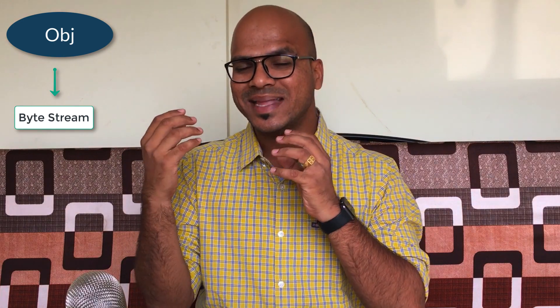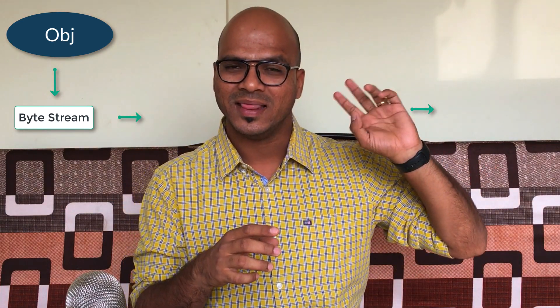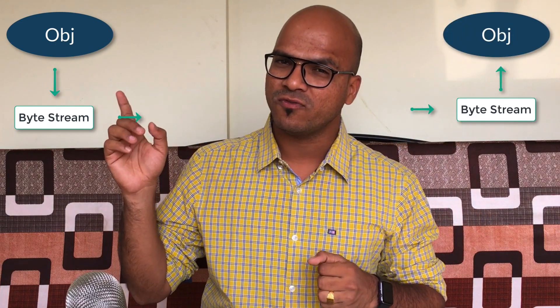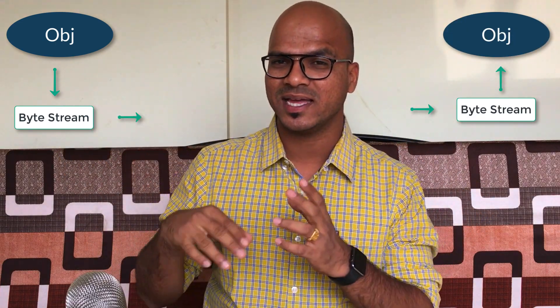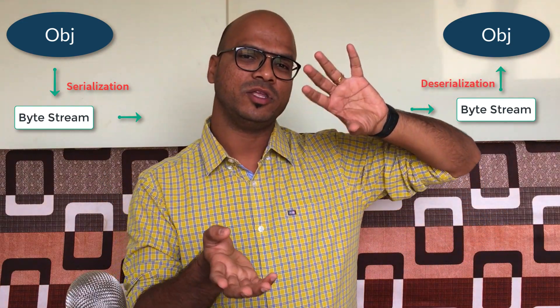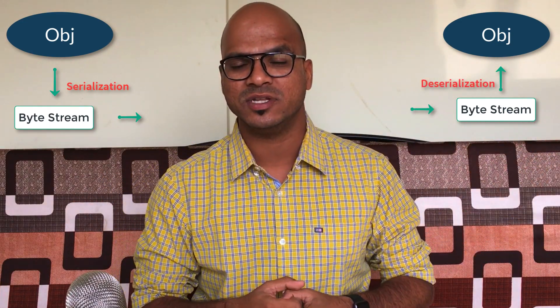That byte stream will be a simple file or normal text. You send that text to some server, and on that server you fetch and create an object again using that data. So to visualize it: you have a machine with an object, that object gets serialized into a byte stream, the byte stream travels over the network to the receiving side, and then you create the object again. The concept of creating a byte stream is called serialization, and creating the object back from a byte stream is called deserialization.